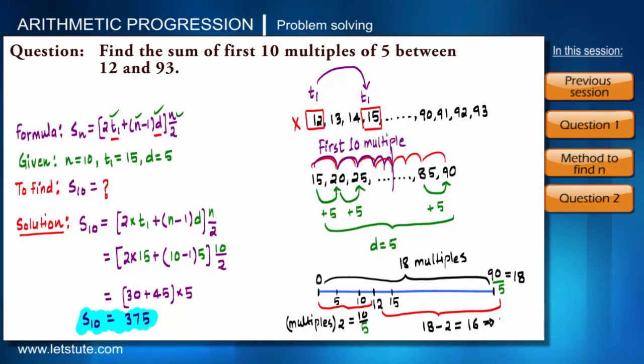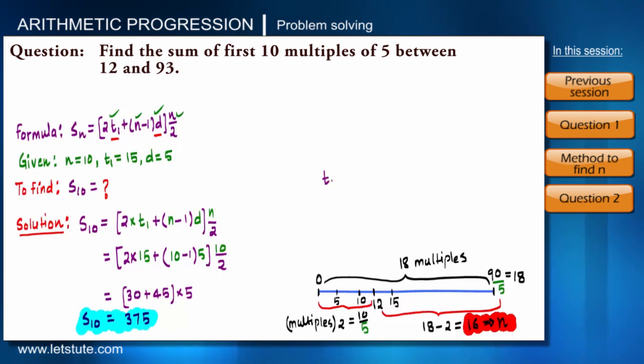So from 12 to 93, that is from 15 to 90, how many multiples will be there? 18 minus 2, that is 16 multiples. You can also use formula: instead of TN you will put 90, T1 will be 15, difference will be 5. You will get n equals 16 only.